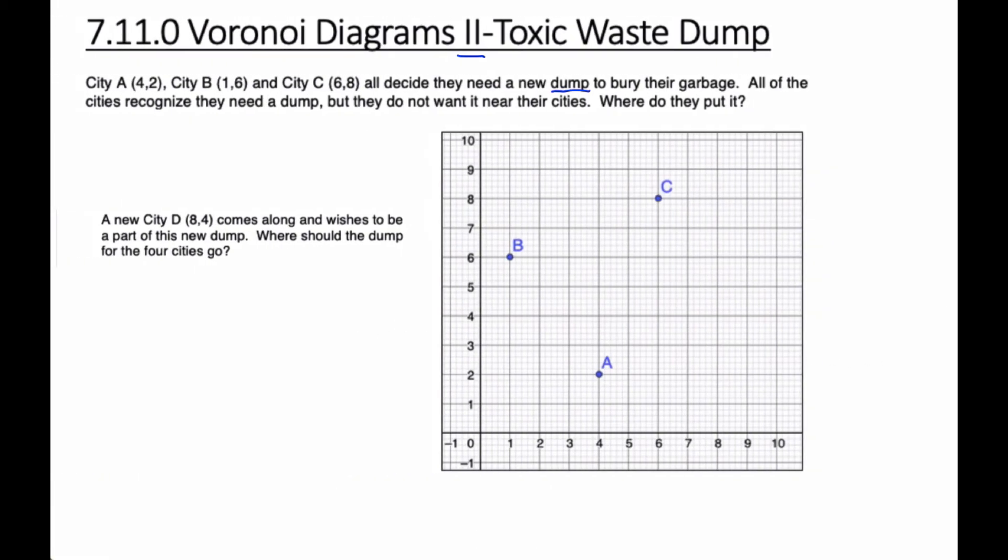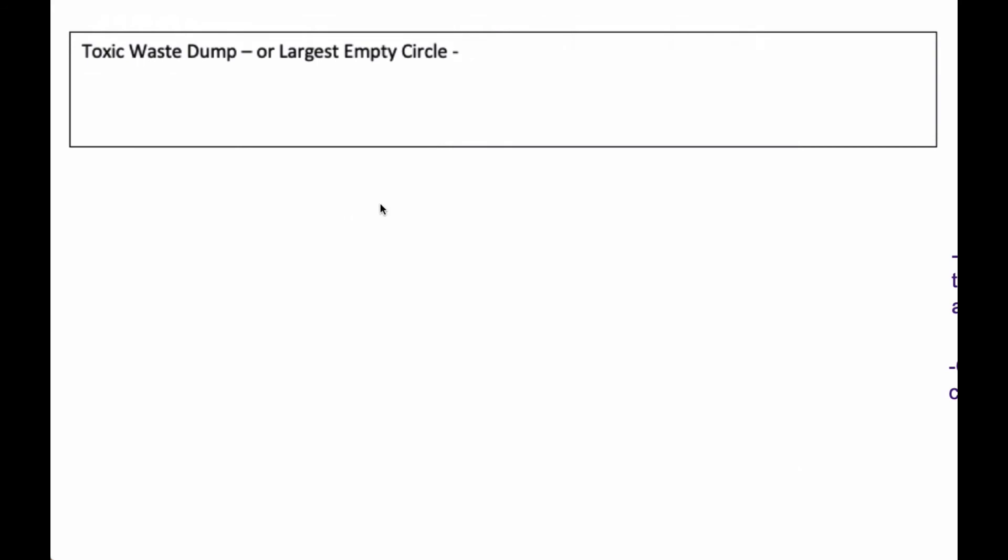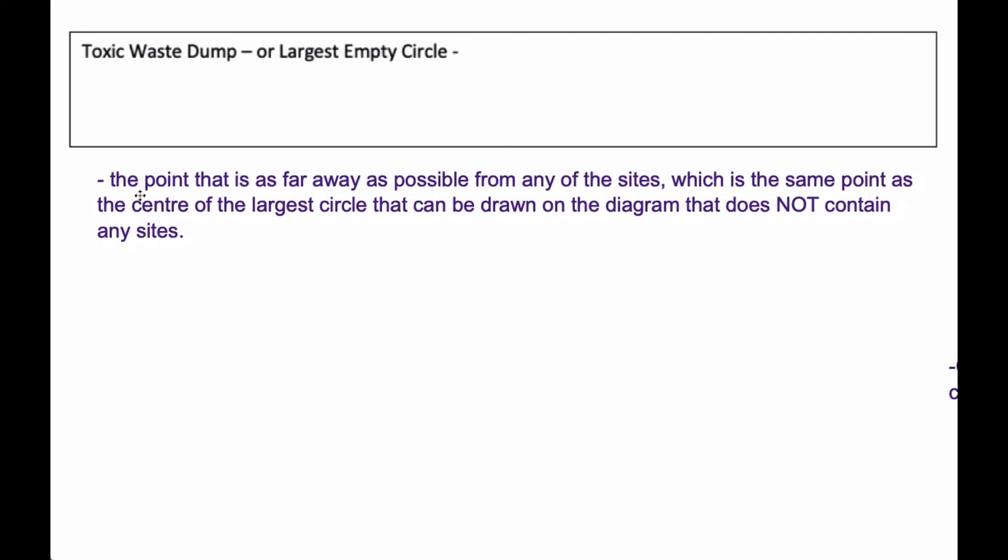So what we have then is the toxic dump or largest circle problem. What happens there is the point that is as far away as possible from any of the sites, which is the same point as the center of the largest circle that can be drawn on the diagram that does not contain any sites. So this circle here is empty. The other scenario we sometimes use it for is to locate a shop or a business that is furthest away from all the competitors,